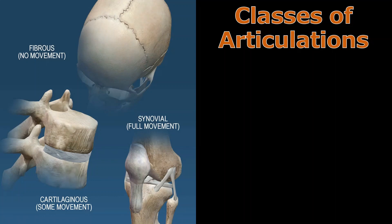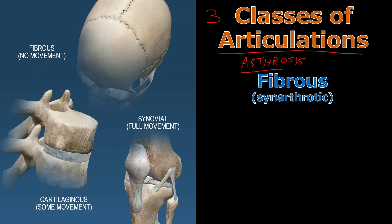Let's start off with the three classes of articulations — that is another word for joints, or you could use the word arthrosis. Arthro is the root for joint. You might have heard of the term arthritis, the inflammation of a joint. So an arthrosis is another way of talking about these articulations. The first big group is called fibrous joints and they are defined as being synarthrotic, meaning they have no movement. For now, fibrous joints are immovable joints.